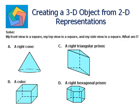Solve. My front view is a square, my top view is a square and my side view is a square. What am I? A: a right cone, B: a cube, C: a right triangular prism, or D: a right hexagonal prism.